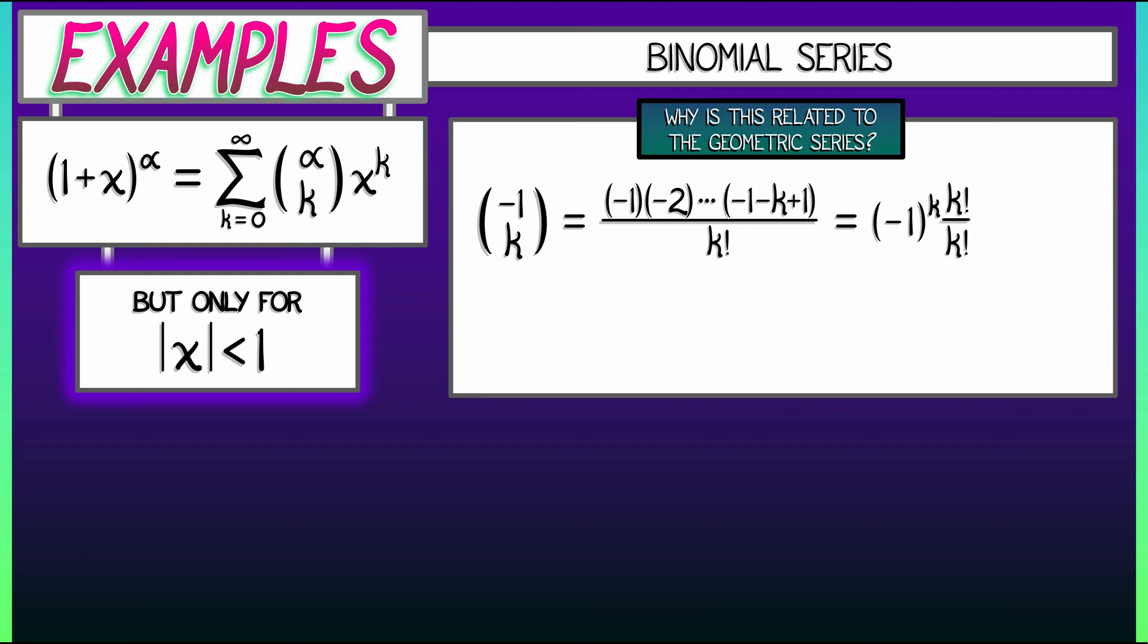Downstairs, we have k factorial. Those guys cancel. We're left with negative 1 to the k. And what that means is that if we look at the geometric series, if we look at 1 over 1 minus x,